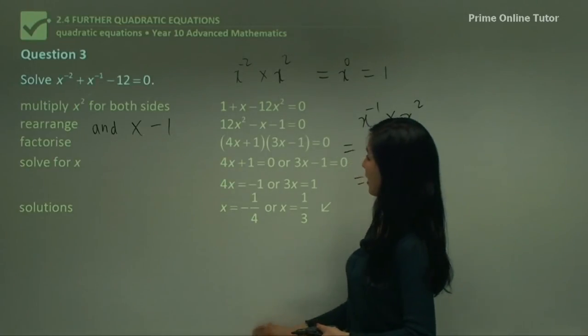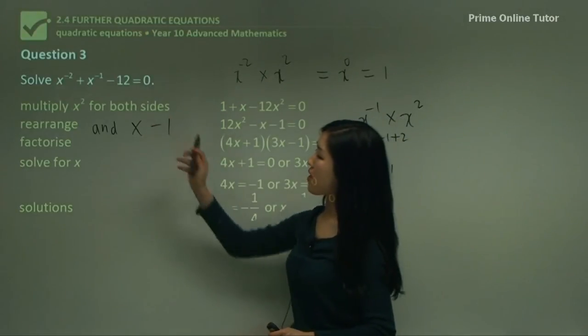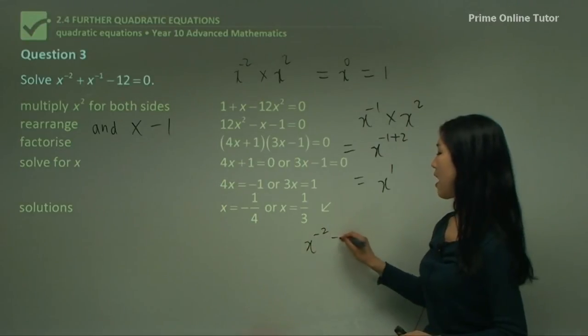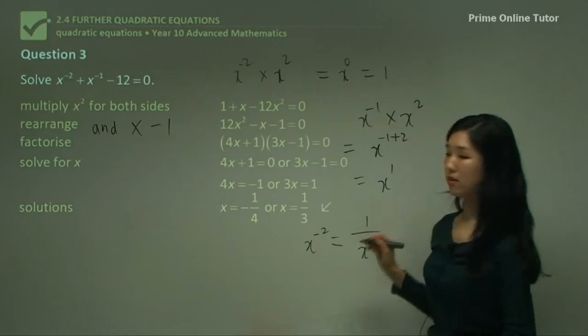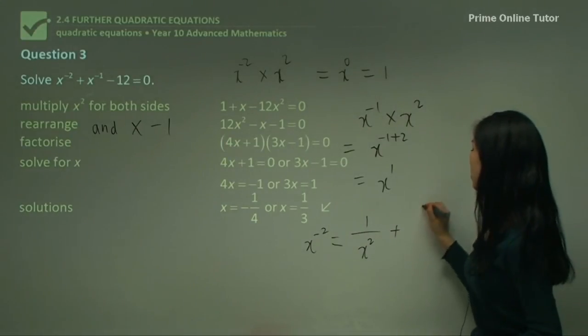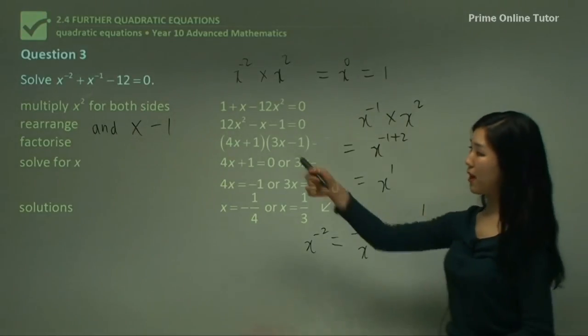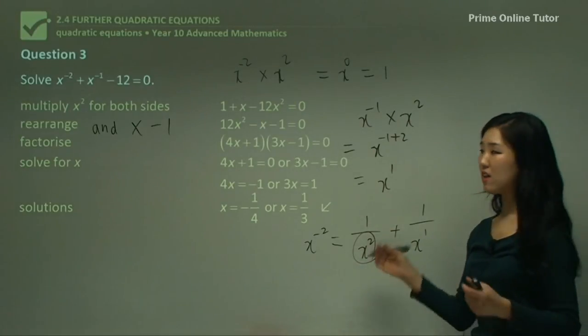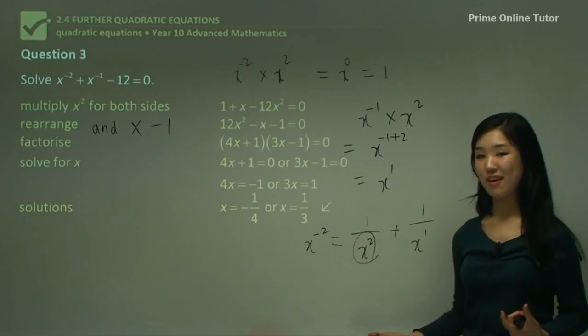And guys, just before we finish this question, you should know that x^-2 as a fraction is 1/x². And the x^-1 is 1/x^1. That's why we multiplied by x² so I can eliminate this one. So if you don't like indices, change it. Convert it into fractions and then go ahead.